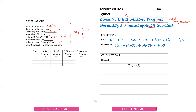For example, when you get a pink color, you observe the burette reading as 7.1. Then you repeat the practical for observation 2. For observation 2, the initial reading is 7.1 (which was the final reading of observation 1), and the final reading after the color change is 14.4.